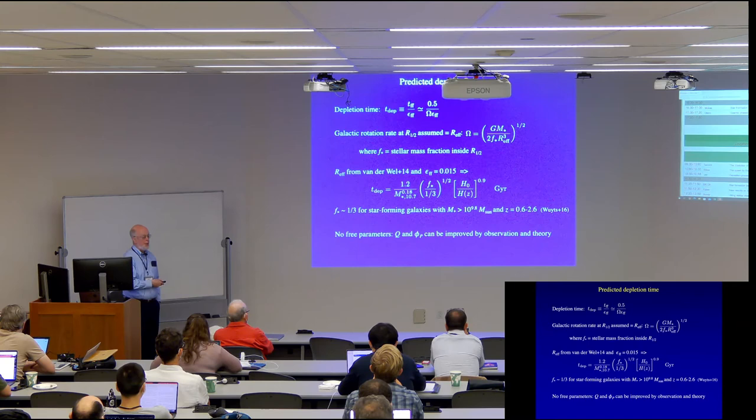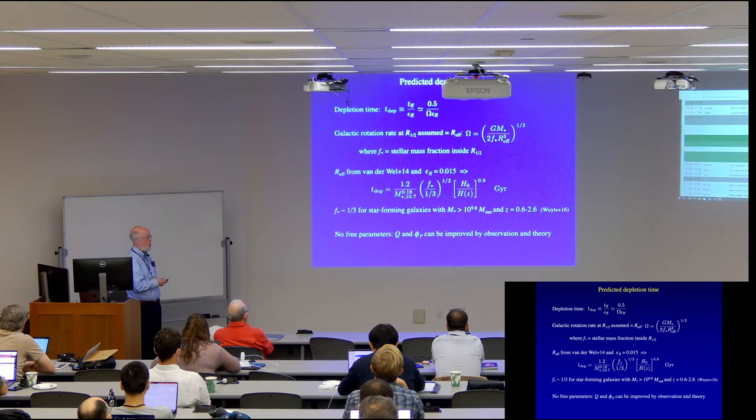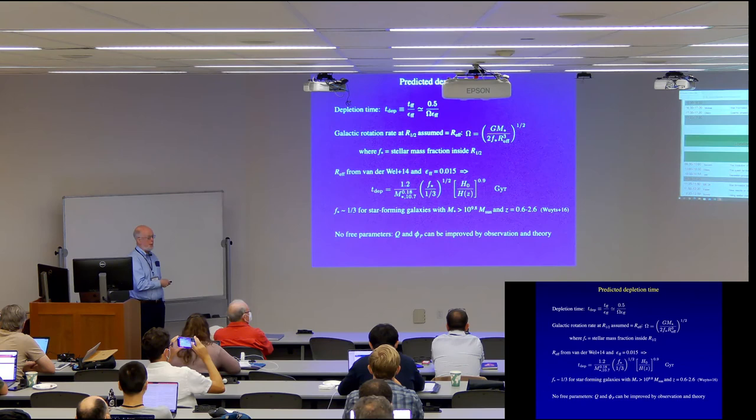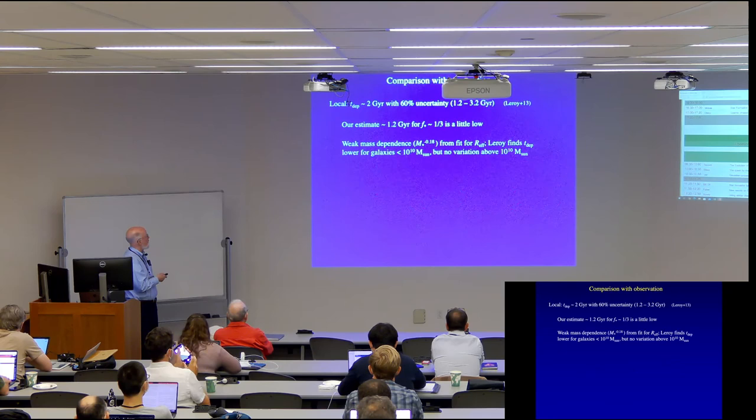And I want to emphasize that there are no free parameters in this. It's true that I've introduced some parameters like q and phi sub p, but those are, in principle, measurable. And I've used, you know, estimates now, but those values can, and we hope to actually improve their values. Okay, so how do we compare that with observation? So I mentioned, if we look at Leroy et al. 13, they got a depletion time around 2 giga years with 60% uncertainty, so I then stretched that out.